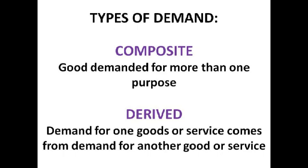Composite demand is when a good is demanded for more than one purpose. For example, paper is needed for making books and for normal writing/lined paper. Say suddenly people really want to read, so there's an increased demand for paper for the purpose of books — it means the supply of paper is reduced for the other purpose, which is writing paper. If supply falls, that means a higher price for writing paper. The basic principle is: if there's increased demand for one purpose of the good, there's decreased supply for the other purpose, which leads to higher prices.